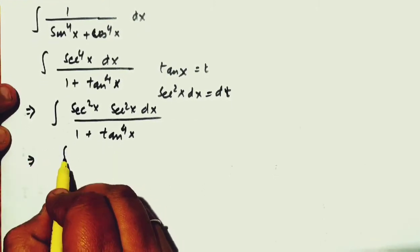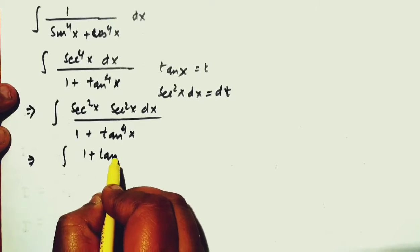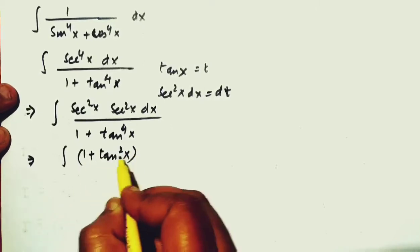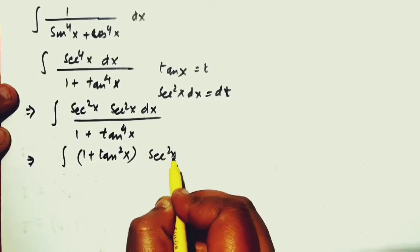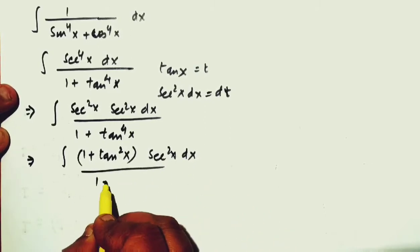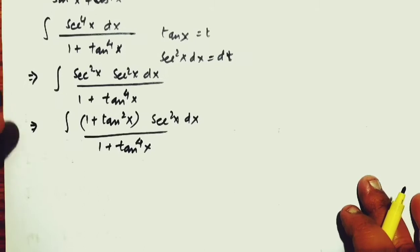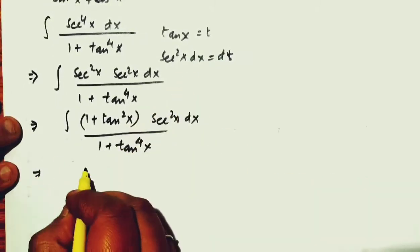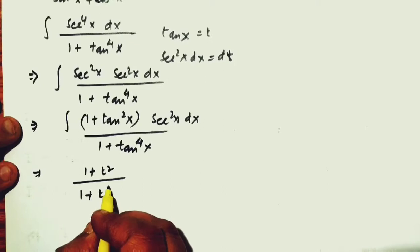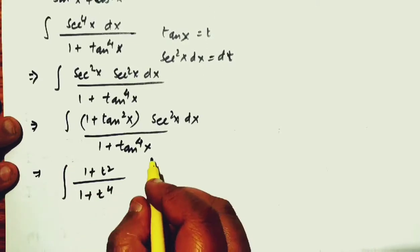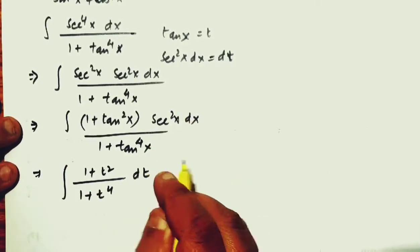Now, this can be expressed as integral of 1 plus tan square x, and this will be sec square x dx divided by 1 plus tan to the power 4x. Now, tan x is t. So, I will write here 1 plus t square divided by 1 plus t to the power 4, and this one is replaced by dt.